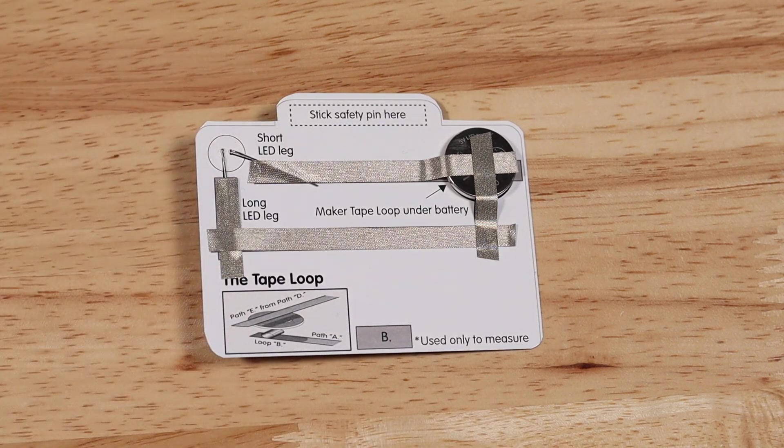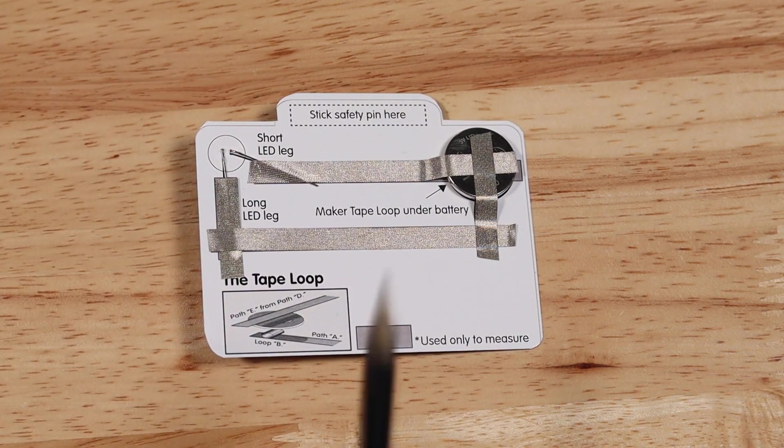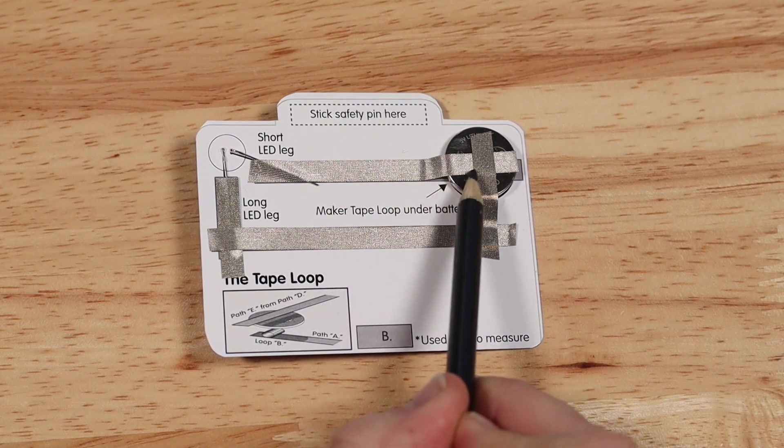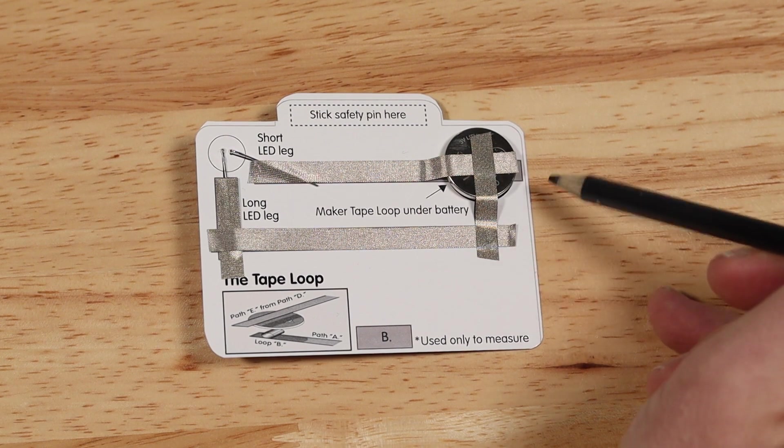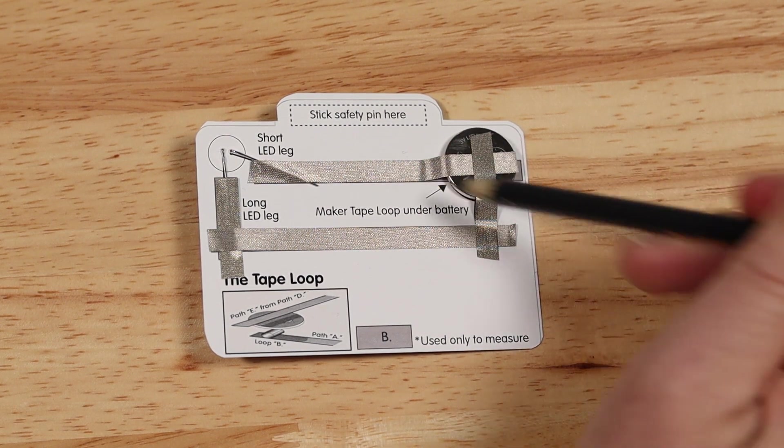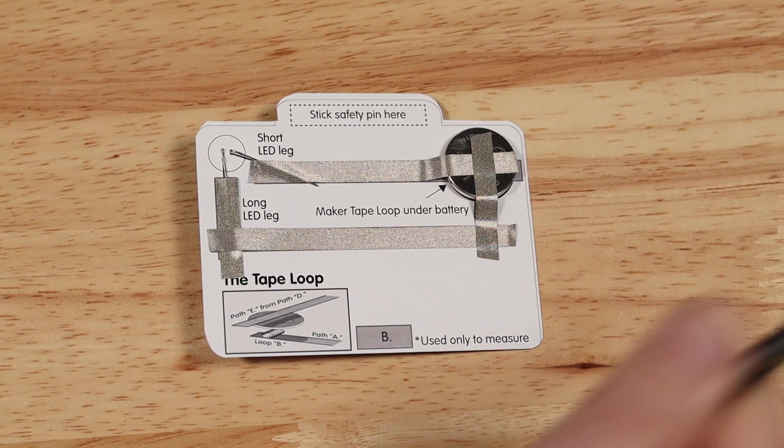Now, here's another variation of the same issue. In this case, somebody put piece A over the top of the battery instead of under it. Now, to fix it, we just need to peel back these two pieces of maker tape, make sure that first piece goes under the battery.